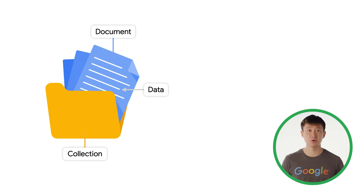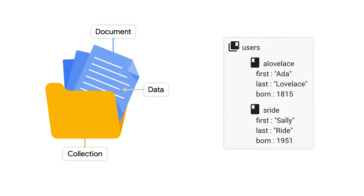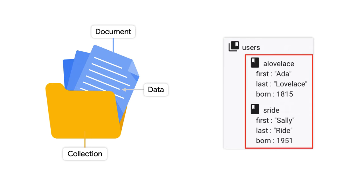Everything in Cloud Firestore is organized into collections and documents. At the top level, there are collections — you may have a collection called 'Users' that contains data about the users of your application. Within each collection is a series of documents; you might have a document for each user. Within each document, data is stored as key-value pairs. For example, data fields could include first name, last name, and year of birth. Since Cloud Firestore is a NoSQL database, you can have different fields for different users — perhaps another user could have fields for first name, country, and gender.